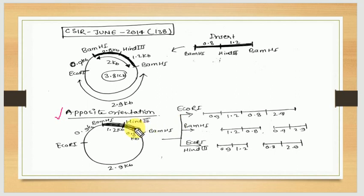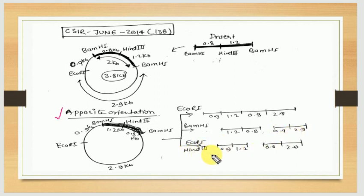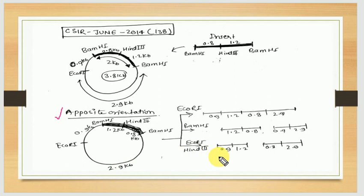With two BAM H1 sites the fragments are 2 kb and 3.8 kb. For the third condition using ECO-R1 and HIN3, the fragments are 1.9 kb, 1.2 kb, 1.8 kb, and 2.9 kb. The total fragments sum to 2.1 kb and 3.7 kb. The third option is correct and the fourth option is incorrect. This is the solution for CSIR question number 138.